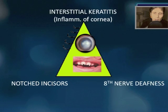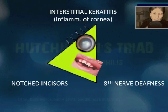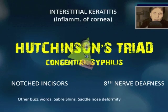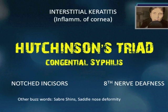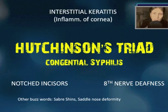Interstitial keratitis, notched incisors, and eighth nerve deafness — name the triad and the associated condition. Some other buzzwords: sabre shins and saddle nose deformity. This is Hutchinson's triad, and you'll see this with congenital syphilis. The triad is interstitial keratitis, notched incisors, and eighth nerve deafness, but you'll also commonly see sabre shins and a saddle nose deformity.